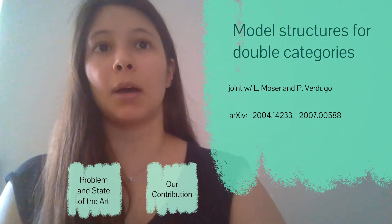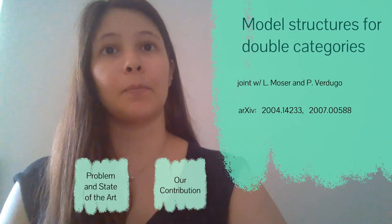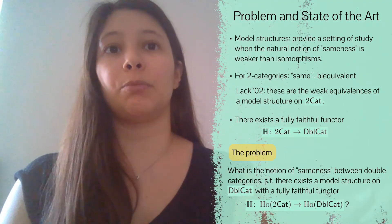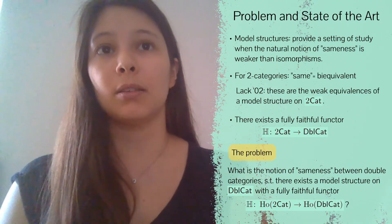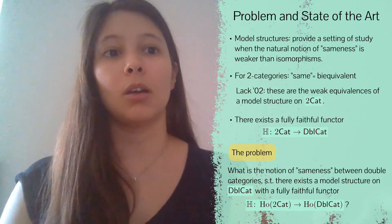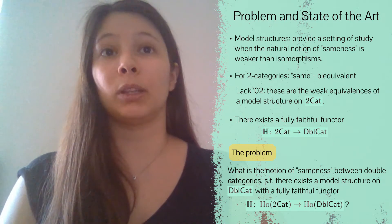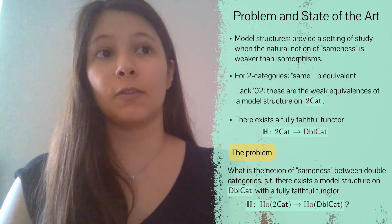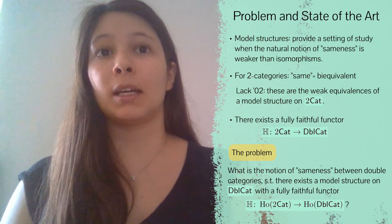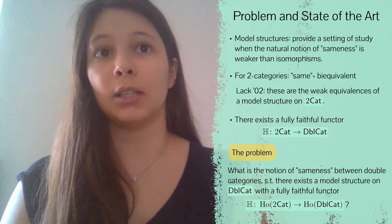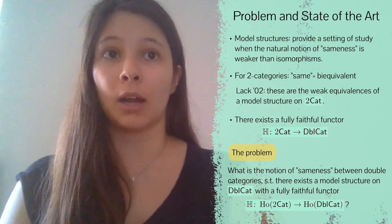My next project is about constructing model structures for double categories, and this is joint work with Lynn Moser and Paolo Verdugo. Model structures provide us with a setting when we want to study objects that have a natural notion of sameness which is weaker than isomorphism. A good example is 2-categories, because normally we consider two 2-categories to be the same when they're bi-equivalent. Lack proved that the bi-equivalences of 2-categories are the class of weak equivalences in some model structure on 2-Cat, the category of 2-categories and 2-functors.